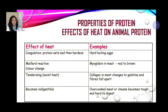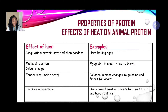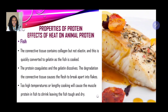Regarding coagulation properties: protein sets and hardens — an example is hard-boiled eggs. The Maillard reaction causes a color change, such as red meat turning brown upon grilling or searing. With moist heat, the product becomes more tenderized — collagen in meat changes to gelatin, making it more digestible as the fibers fall apart and become easier to chew. However if heated too long, animal protein becomes indigestible — overcooked meat or cheese will become tough and hard to digest.